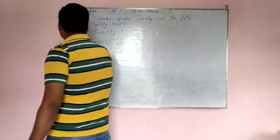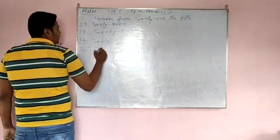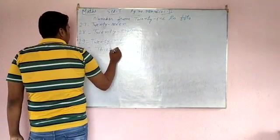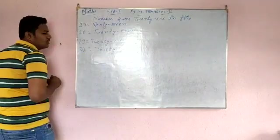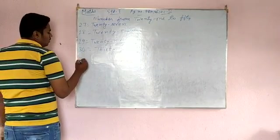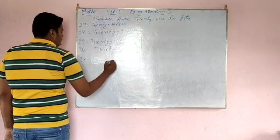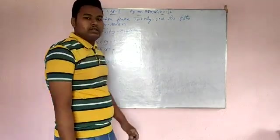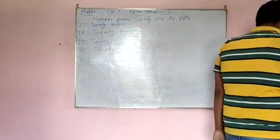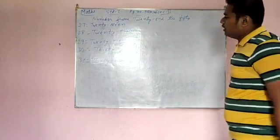Now 30, T-H-I-R-T-Y is 30. 31, T-H-I-R-T-Y, O-N-E, 31. Let's write down.